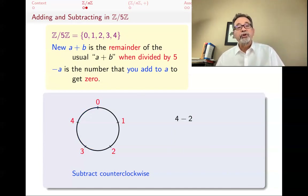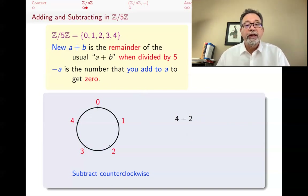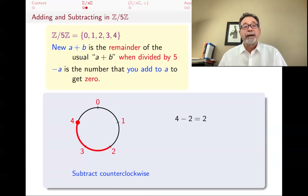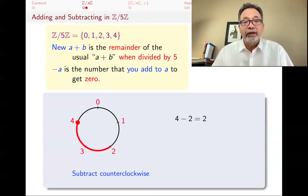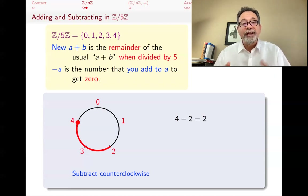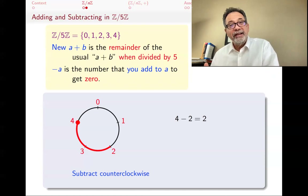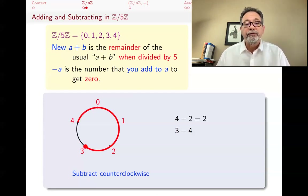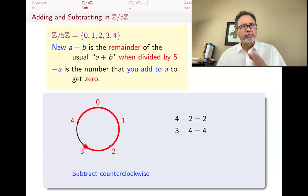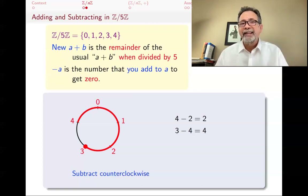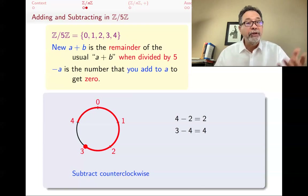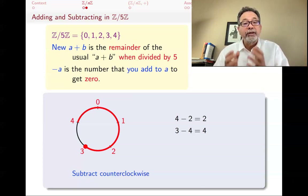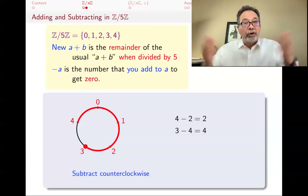We can also do subtraction — when we want to subtract, we go counterclockwise on the circle. What's 4 minus 2? You start at 4, go 2 units the other way, and you get 2, as you would have expected. You could also think about it more carefully: minus 2 is a number that if you add to 2 you get 0, and in this world that's 3, because 2 plus 3 is 0. So 4 minus 2 is the same as 4 plus 3. Is 4 plus 3 equal to 7? No — it's the remainder of 7 when divided by 5, which is 2. Another example: 3 minus 4. You start at 3, go counterclockwise 4 units, and get to 4. So 3 minus 4 is 4. Checking: bring minus 4 to the other side, and 4 plus 4 is 8, and the remainder when divided by 5 is 3. So that works.